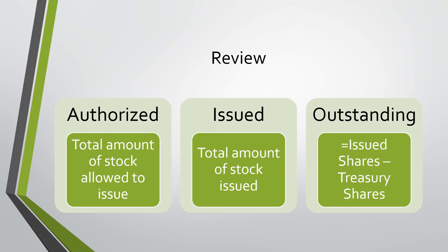For a quick review: Authorized shares is the total amount of stock allowed to issue. Issued shares is the total amount of stock issued. And Outstanding shares is issued shares minus treasury shares.